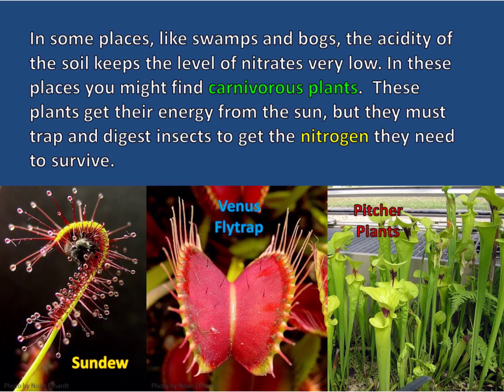In some places, like swamps and bogs, the acidity of the soil keeps the level of nitrates very low. In these places, you might find carnivorous plants. These plants get their energy from the sun, but they must trap and digest insects to get the nitrogen they need to survive.